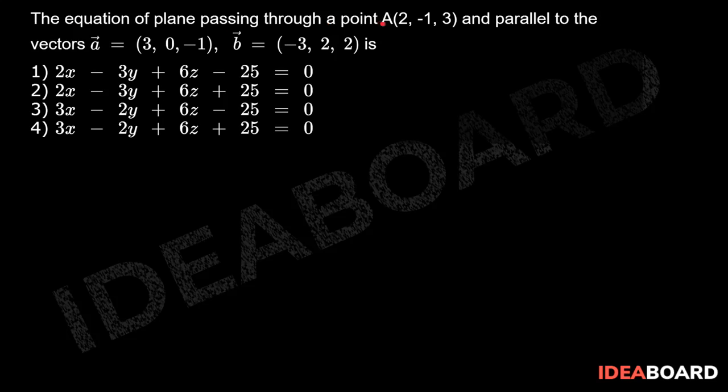The equation of the plane passing through a point A(2, -1, 3) and parallel to the vectors a̅ equals (3, 0, -1) and b̅ equals (-3, 2, 2).